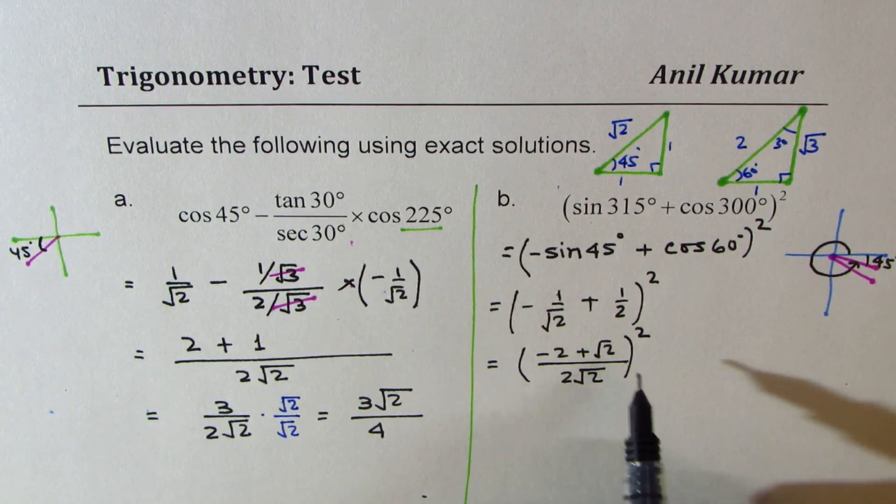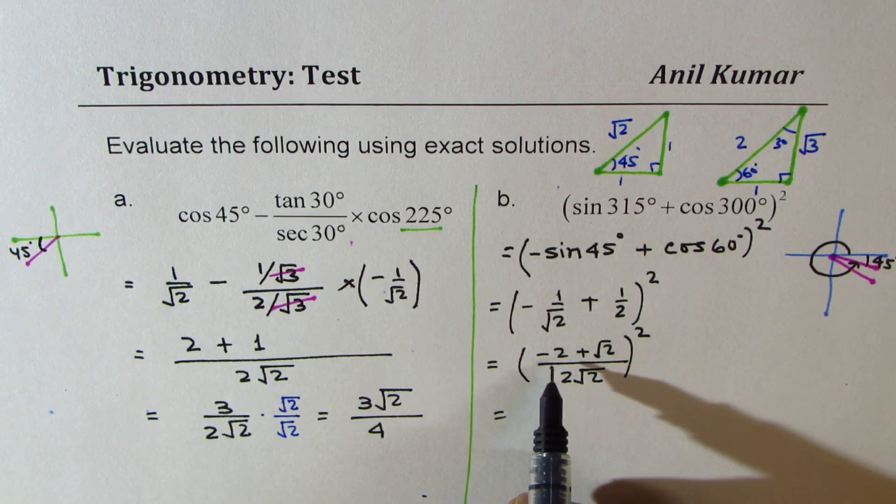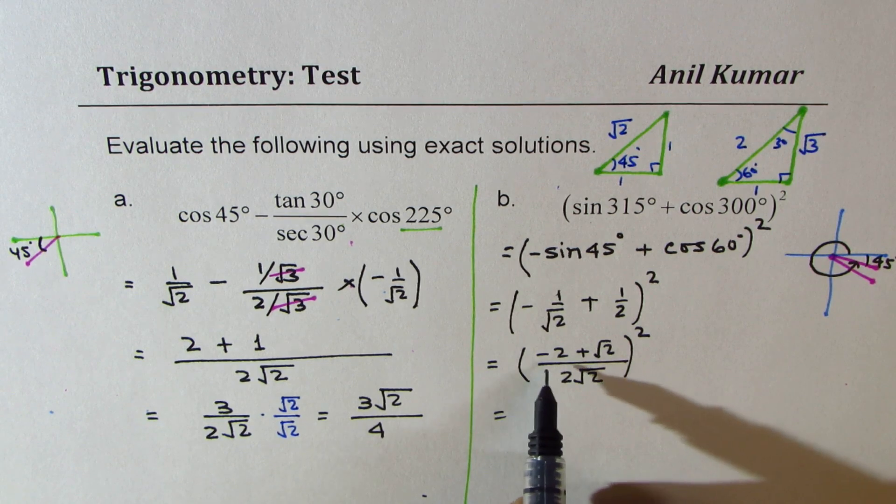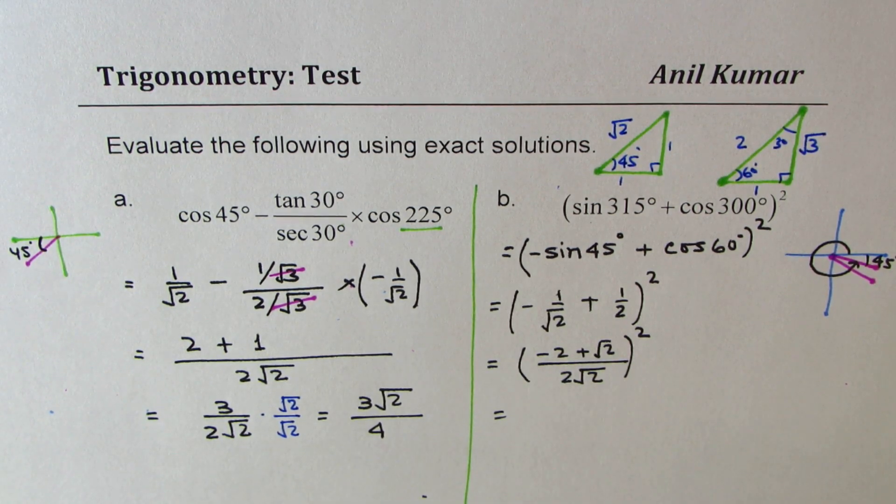So once you open this bracket with whole square, in the numerator we get a square plus b square plus 2ab.